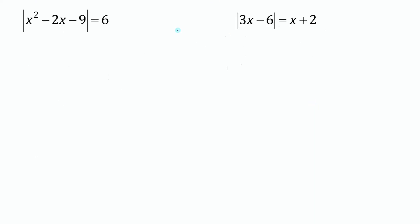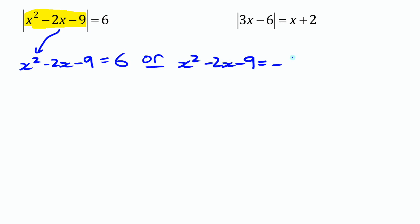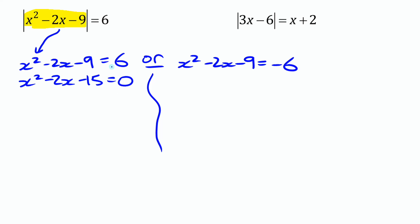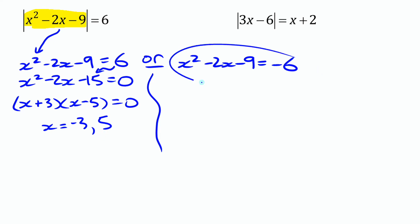Let's try another one using the same approach. We take absolute value of x squared minus 2x minus 9 equals 6 and say that either x squared minus 2x minus 9 equals 6, or it equals negative 6. Each of those is a quadratic, so we move all terms to one side and try factoring. The first factors as (x+3)(x-5), giving x equals negative 3 or positive 5.